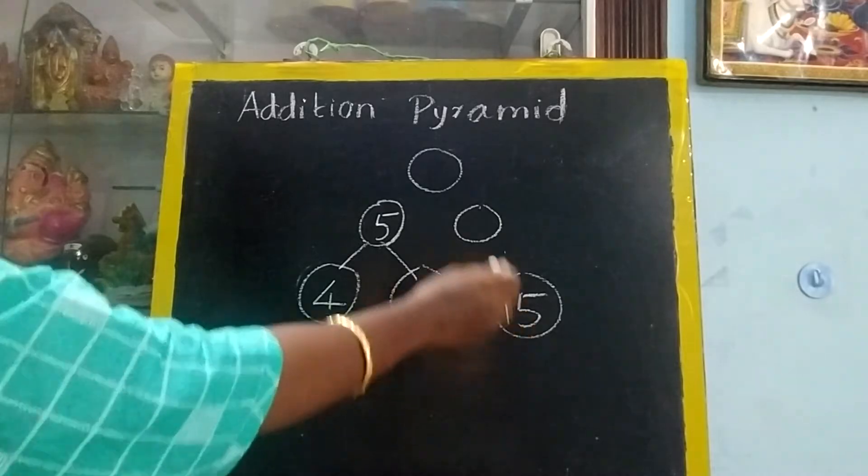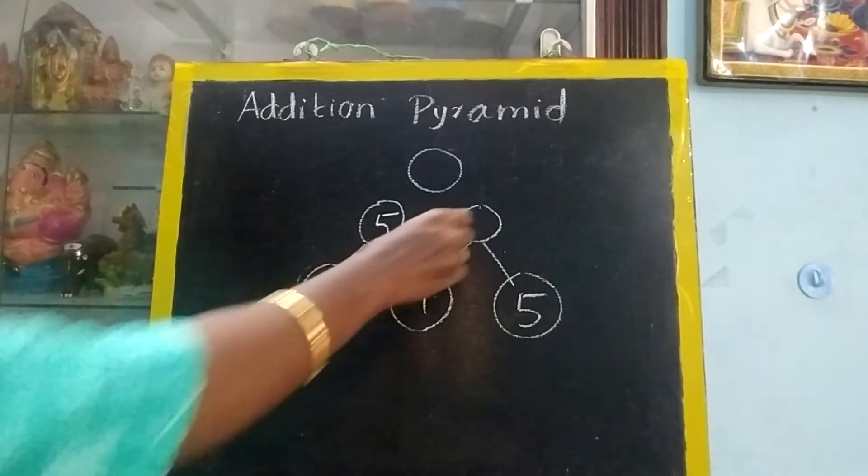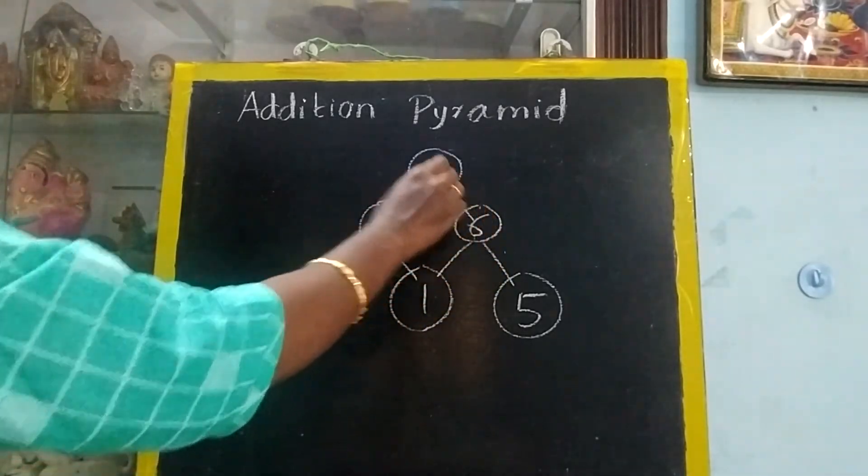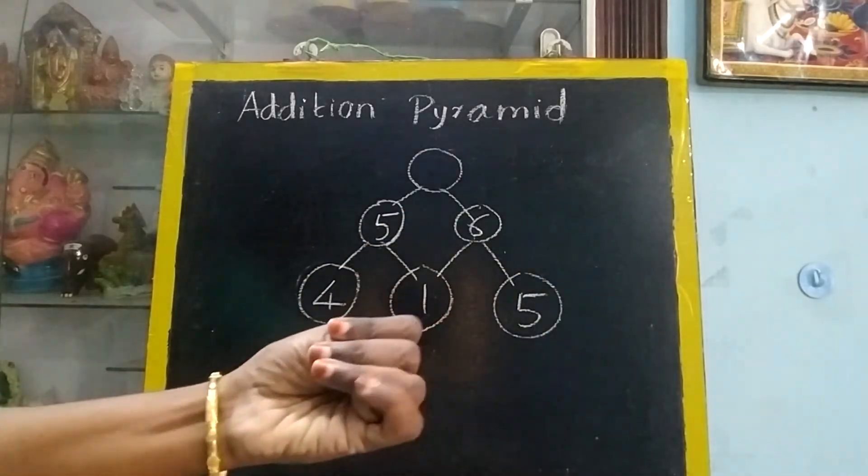Now, these two you have to add and write it. 6 plus 5: 7, 8, 9, 10, 11.